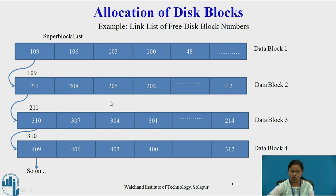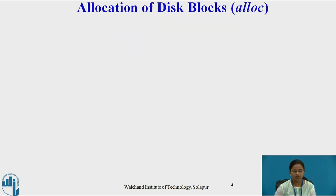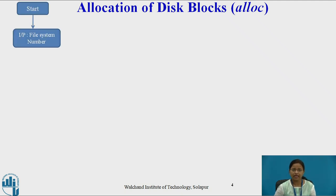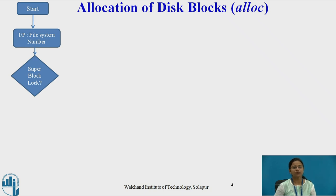All these free disk blocks are maintained by the super block. Now let us see how these free disk blocks are allocated to the process when the process wishes to write some content to the file. This is done by using the alloc algorithm. The input to this alloc algorithm is the file system number. Initially, the process checks whether the super block is locked.